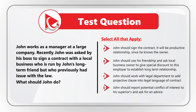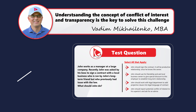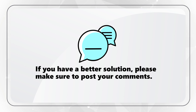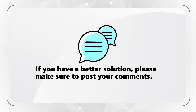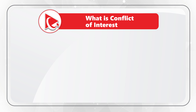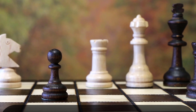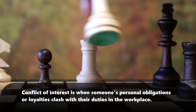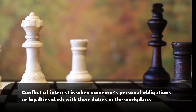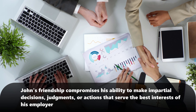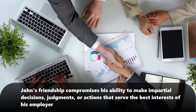What's interesting about these types of questions is that you need to select all that apply. I think this question is designed to test the candidate for the concept of conflict of interest. John has a conflict of interest with his employer — conflict of interest is when someone's personal obligations or loyalties clash with their duties in the workplace. John's friendship compromises his ability to make impartial decisions, judgments, or actions that serve the best interests of his employer.